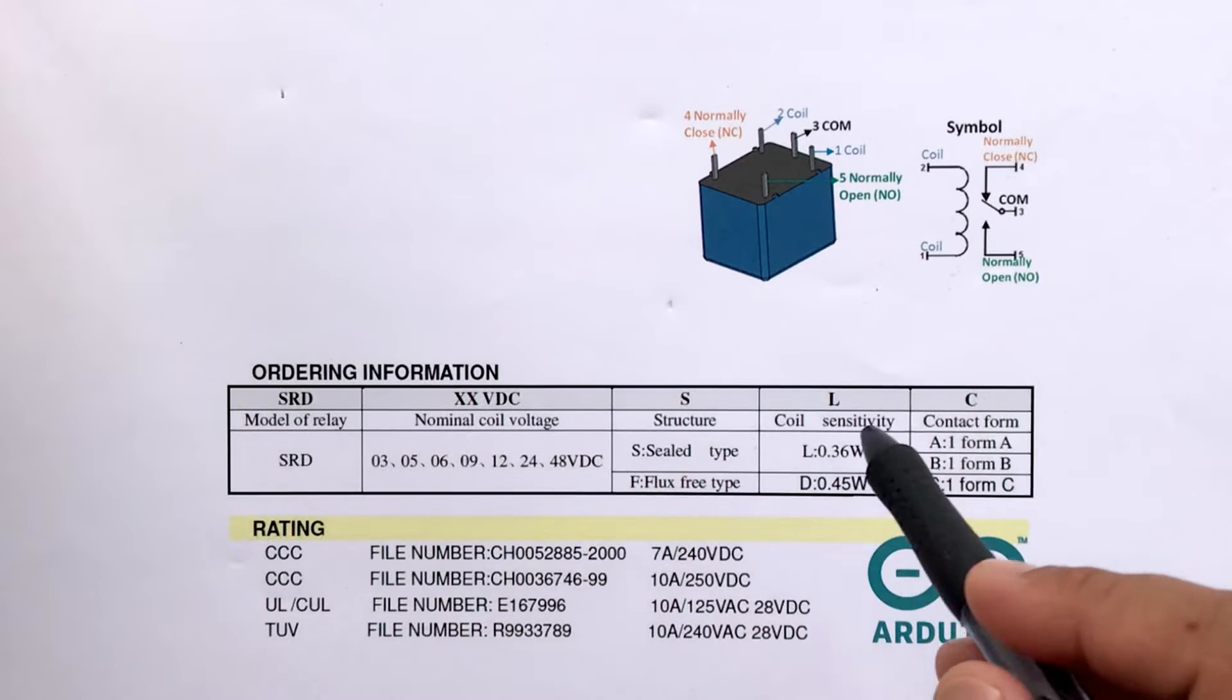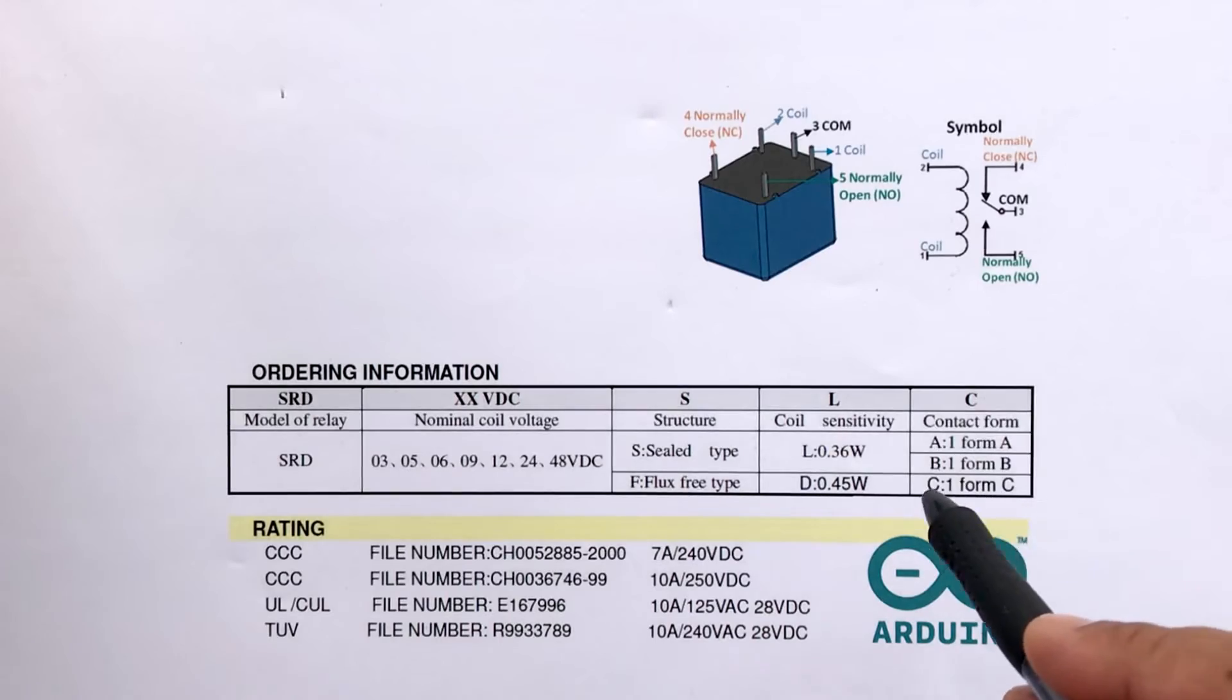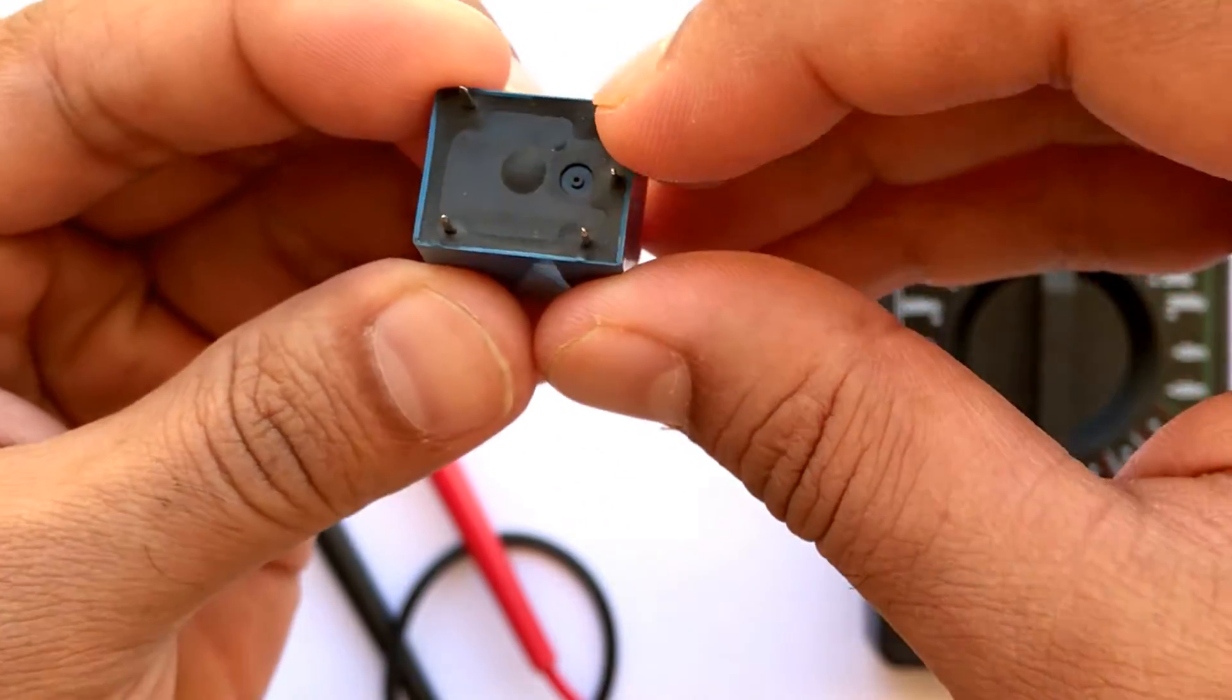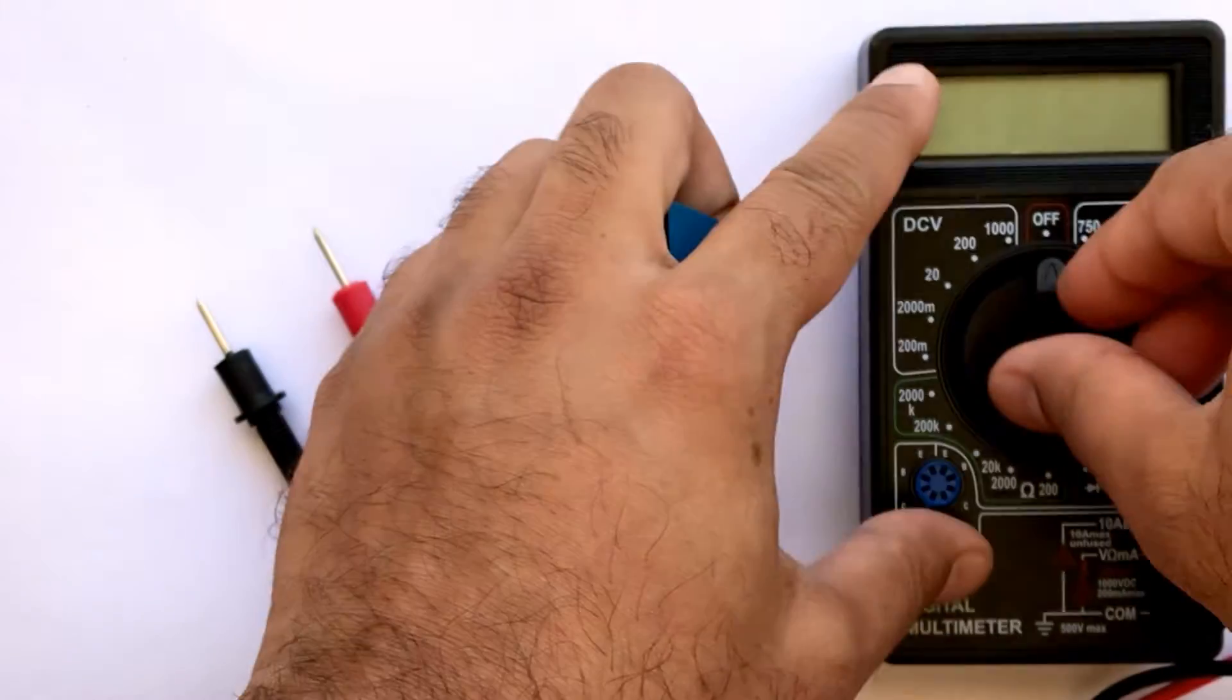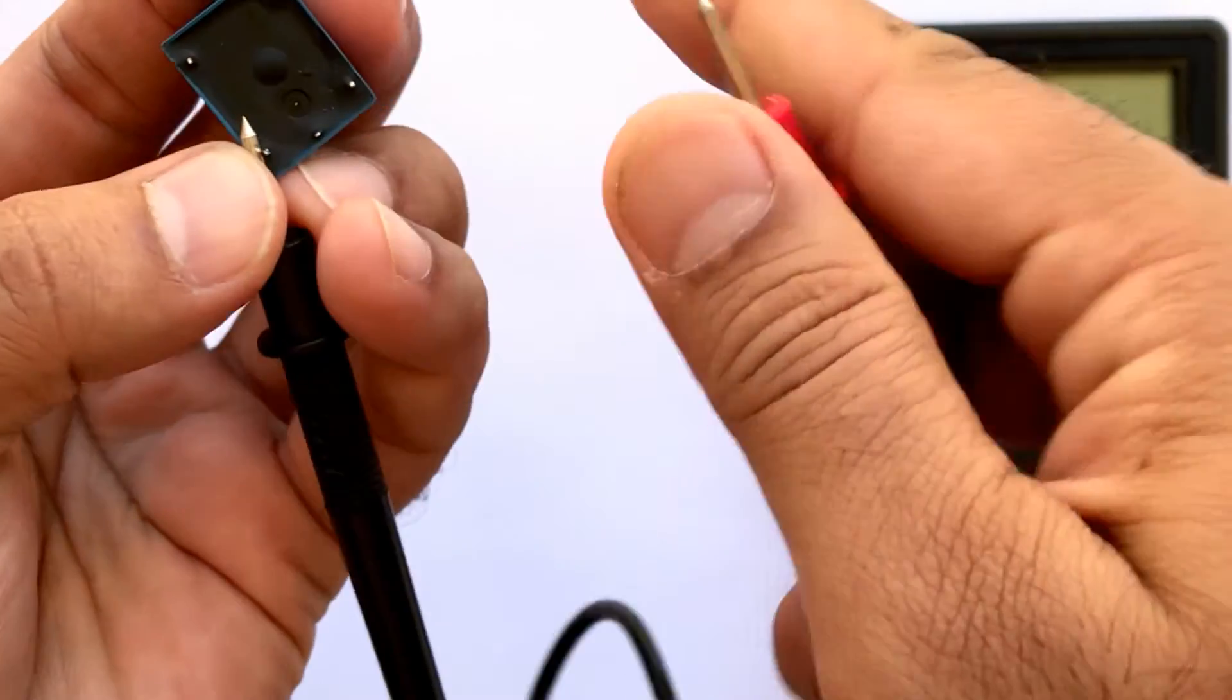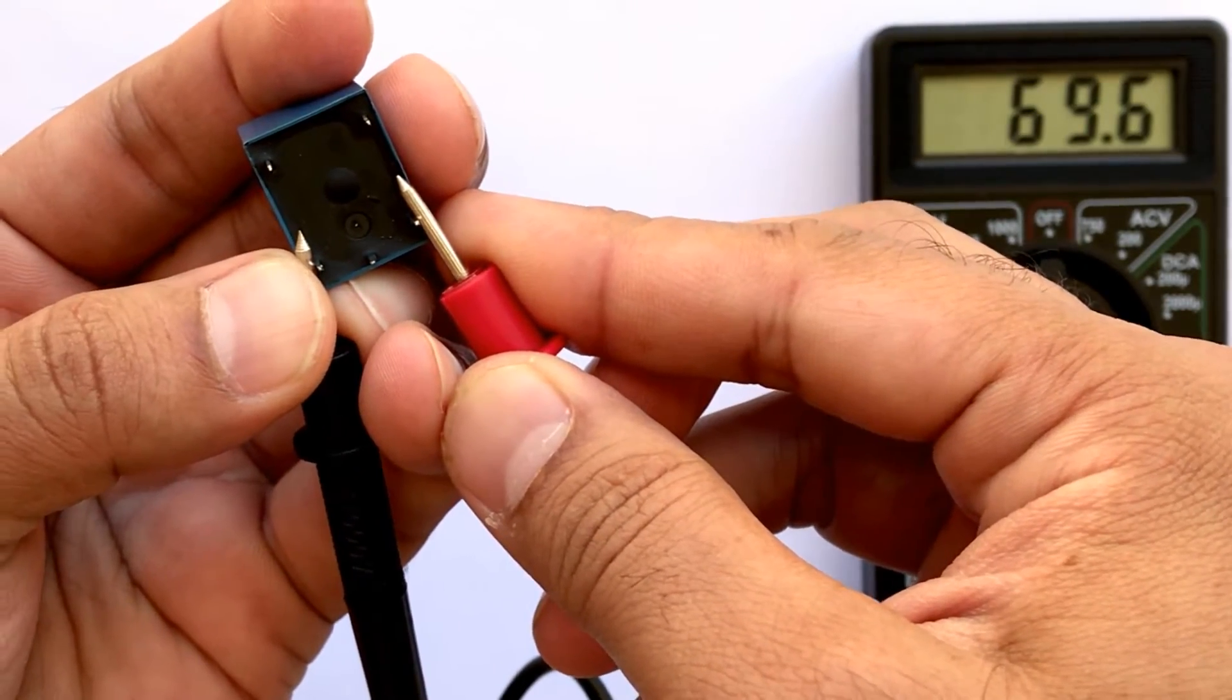S stands for the seal type structure. L is the coil sensitivity which is 0.36W. C tells us about the contact form. Let's start by determining the relay coil pins. You can do it either by connecting a multimeter to the resistance measuring mode with a scale of 1000 ohms, since the coil resistance normally ranges between 50 ohm and 1000 ohm, or by using a battery.